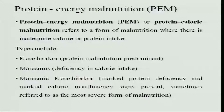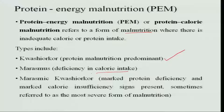Protein energy malnutrition is a deficiency of protein and calories in the diet — it refers to a form of malnutrition. The types are: when there is only protein deficiency, it is called kwashiorkor, and marasmus is when there is deficiency in calorie intake. There may be marasmus alone, kwashiorkor alone, or marasmic kwashiorkor, which occurs when both protein and calorie deficiency are present.